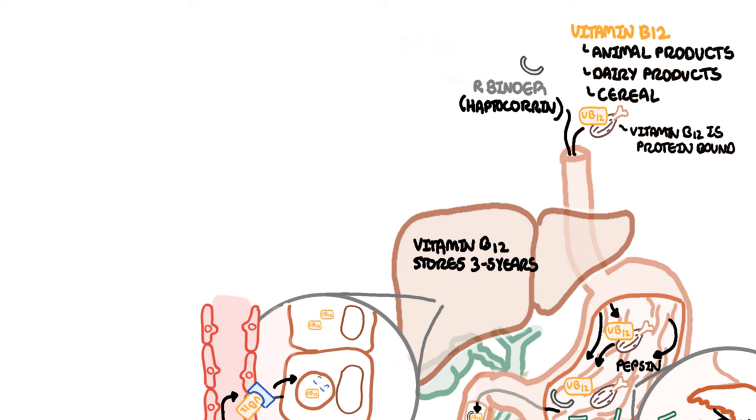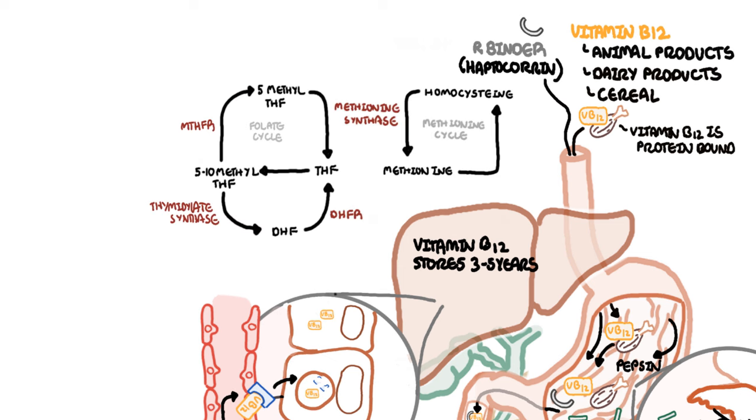Continuing on our journey, now that vitamin B12 is absorbed into the cells around the body, what does it actually do? Vitamin B12 and folate both play a critical role in DNA and RNA synthesis. Vitamin B12 and folate are involved in the folate and methionine cycle. Vitamin B12 is a cofactor with methionine synthase, which helps drive some of the reactions within these two cycles.